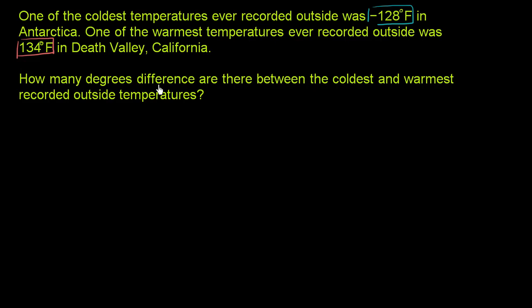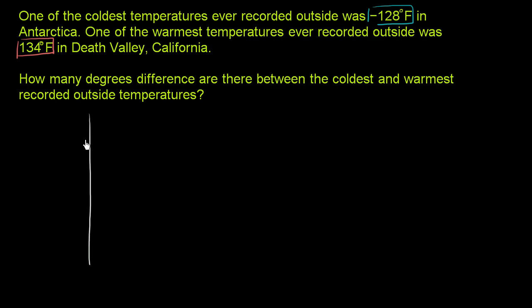How many degrees difference are there between the coldest and warmest recorded outside temperatures? Let's think about this. What I'll do is plot them on a number line — a vertical number line that has a resemblance to a thermometer, since we're talking about temperature. So I'm going to make my number line vertical right over here.